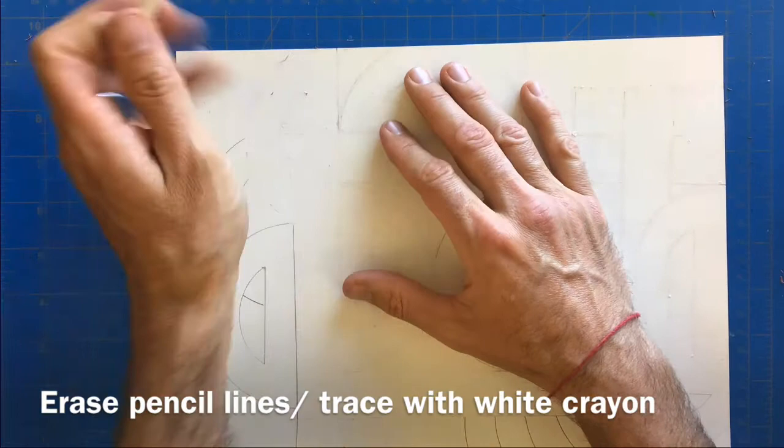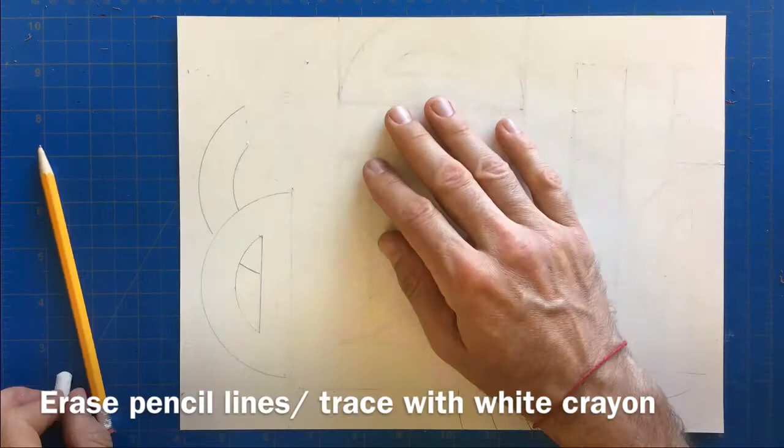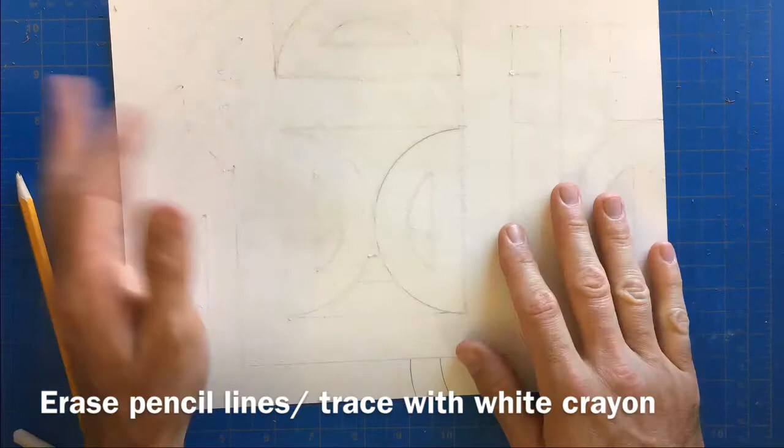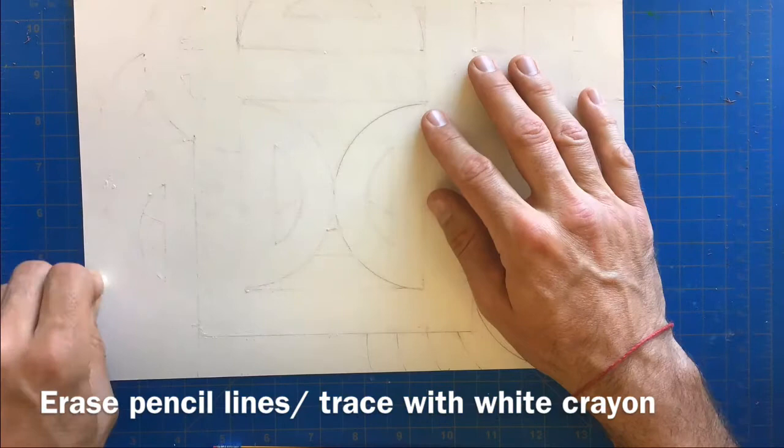So when we paint over this, the paint will not stick to any of those areas that we have marked with the white crayon. Those areas will stay white, and that is called wax resist, because we're using watercolor and it doesn't like to stick wherever there is wax on the paper.